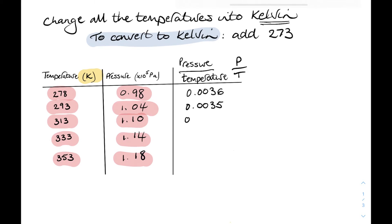And if we do that for each row in the table, we can see that what we get is pretty much a constant value.